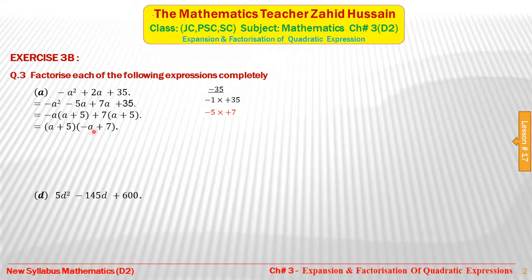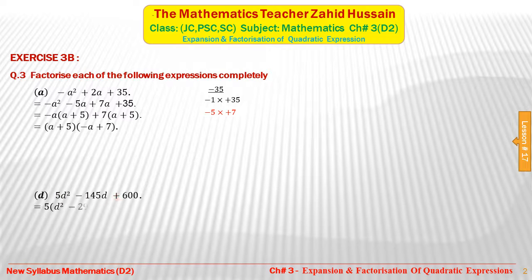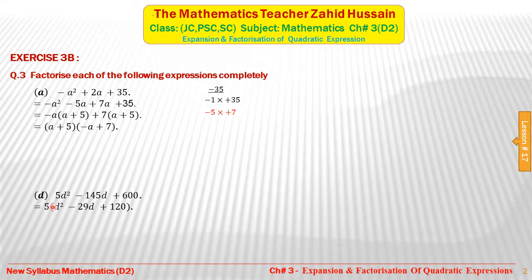Part B is slightly different. In this expression, 5 is common in all three terms, so we take 5 out first to make factorization easier. When we take 5 common, we get 5(b² minus 29b plus 120). Dividing 145 by 5 and 600 by 5 gives 29 and 120. Now we factorize the expression inside the bracket. Multiply the coefficient of b² by the constant term: 1 multiplied by 120 gives plus 120. Because this is positive and the middle term is negative, both factors will be negative.